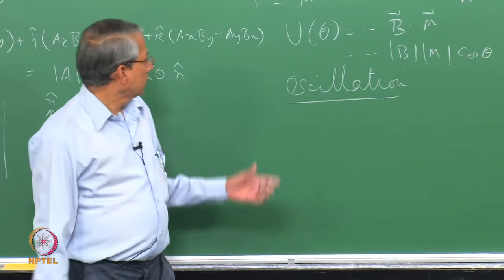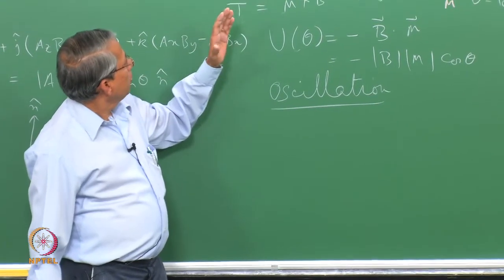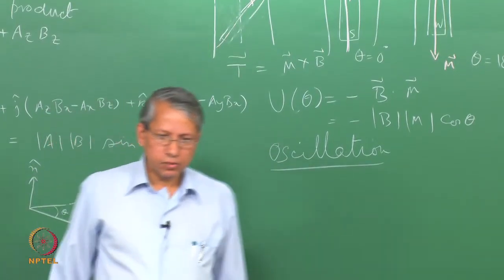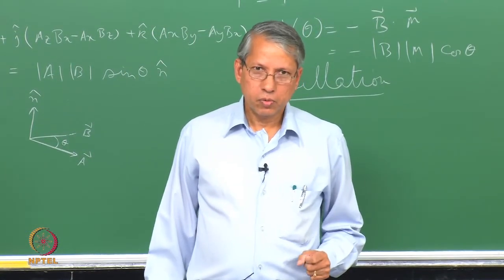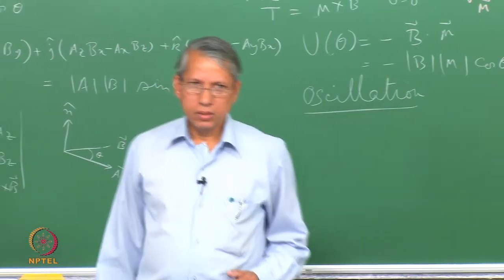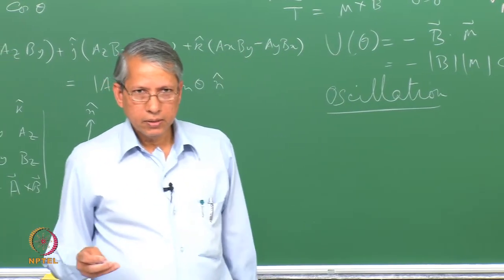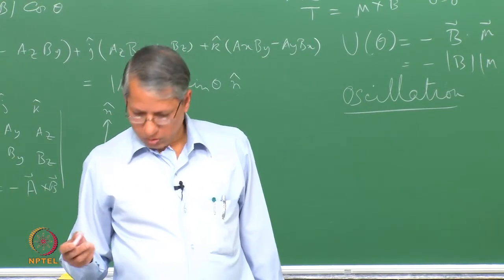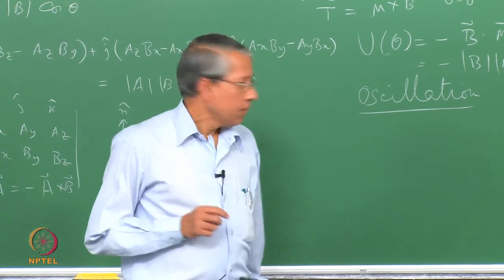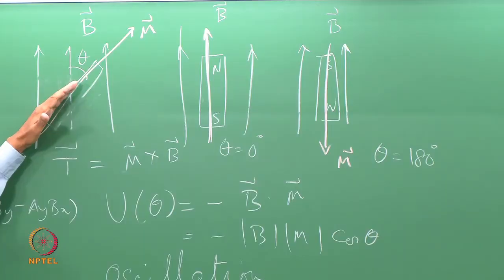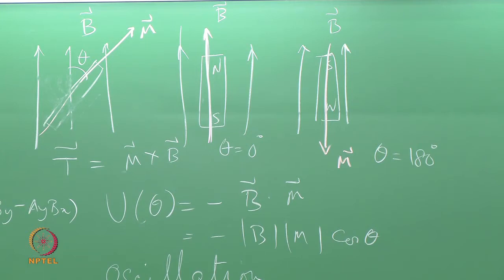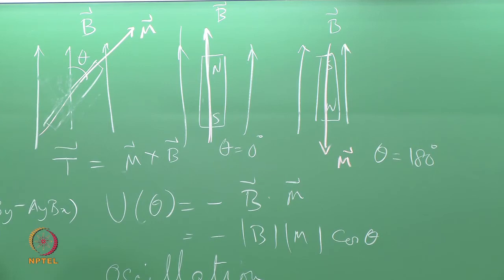Now, what happens if this magnet is not a bar magnet but the magnet of elementary particles like electrons or protons? The magnetic moment comes from orbital or spin angular momentum. So we should see what sort of motion it experiences if this magnet has angular momentum to start with.